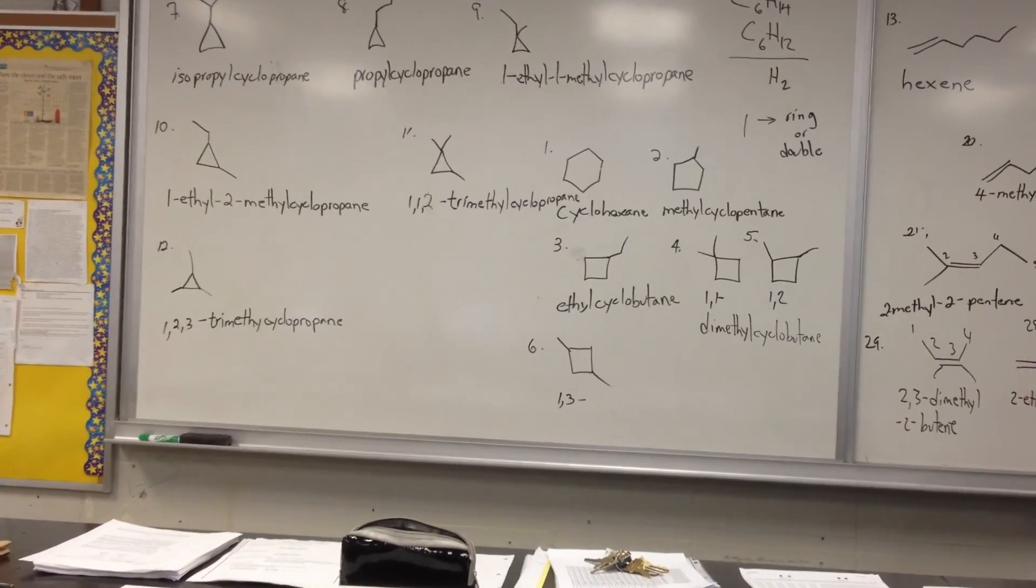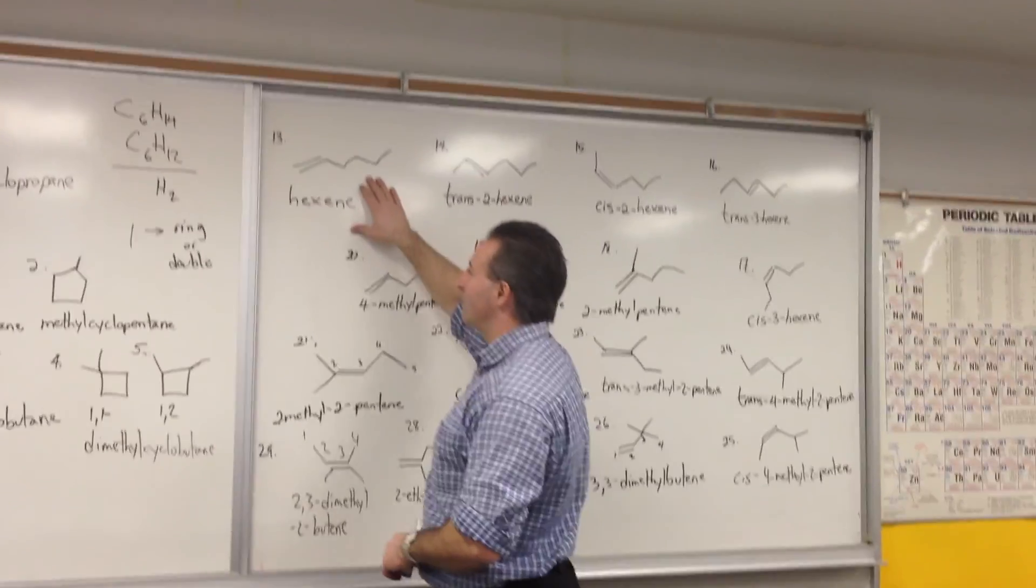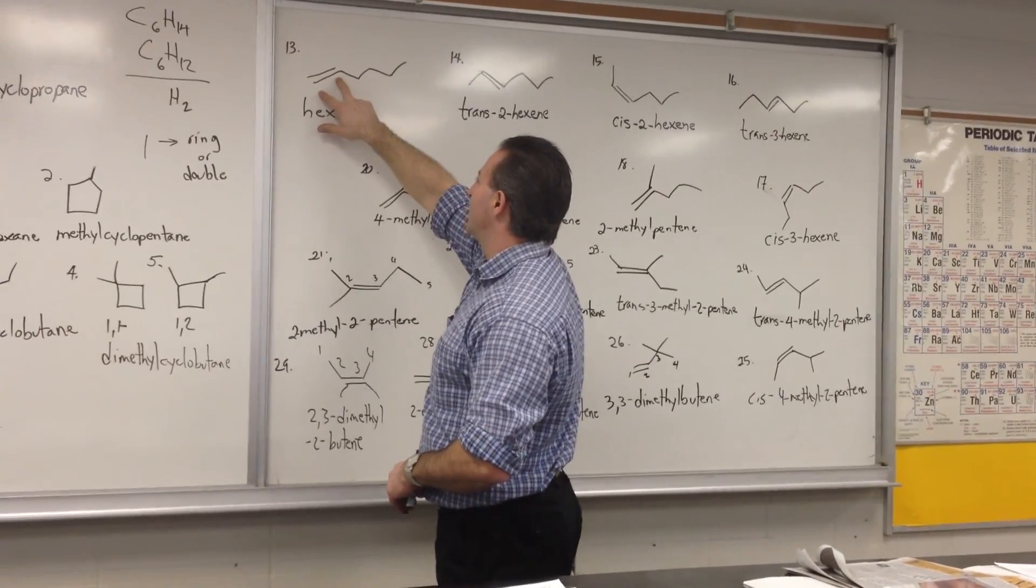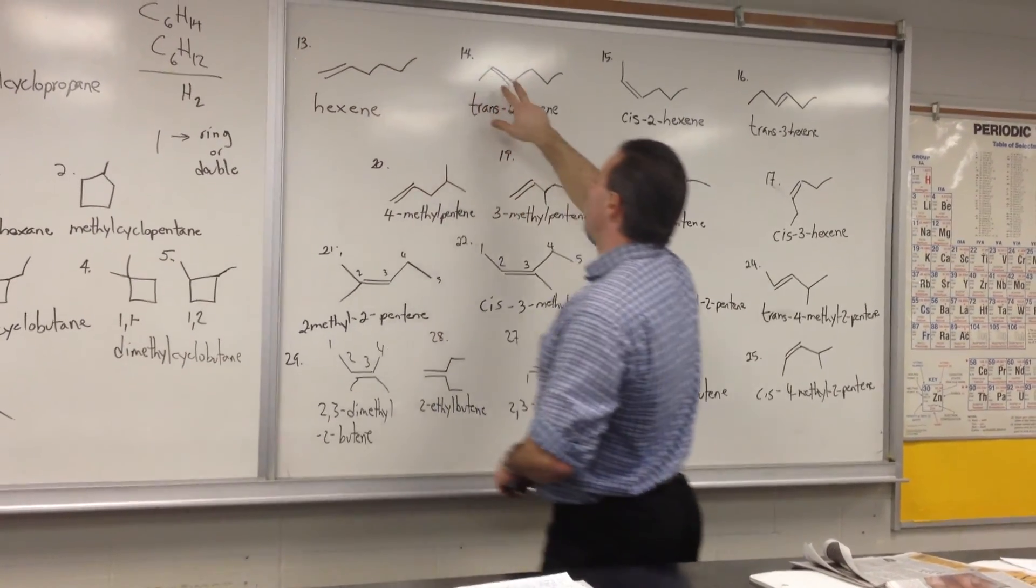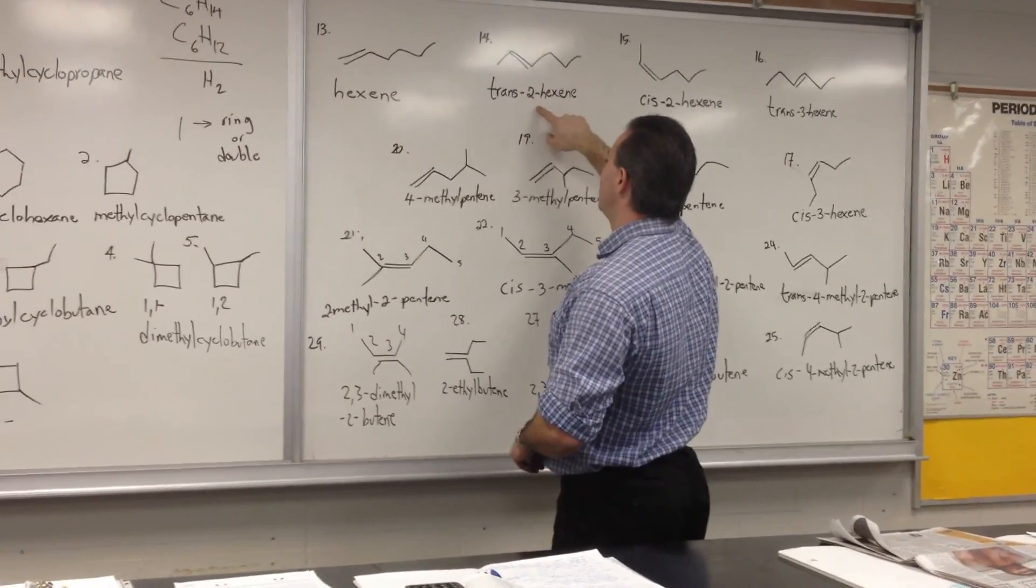The thirteenth isomer, and the most logical one to name with six carbons in it, is a hexene. So the double bond is on the terminus end. Then we start moving the double bond down the molecule. So we get 2-hexene.